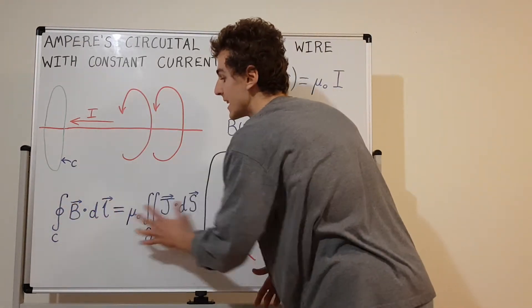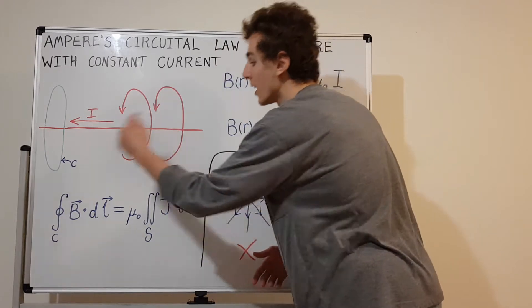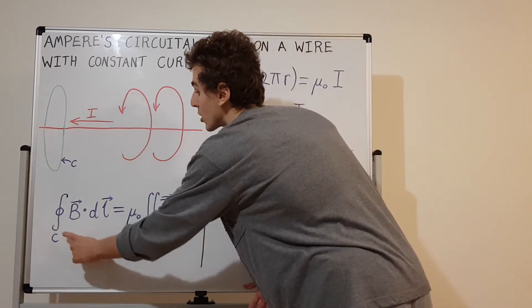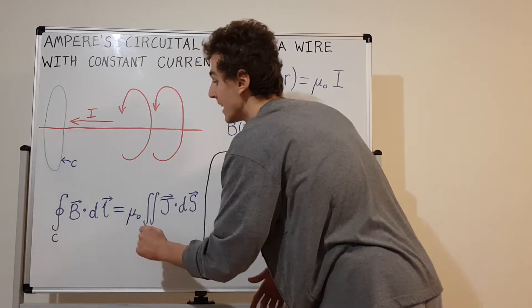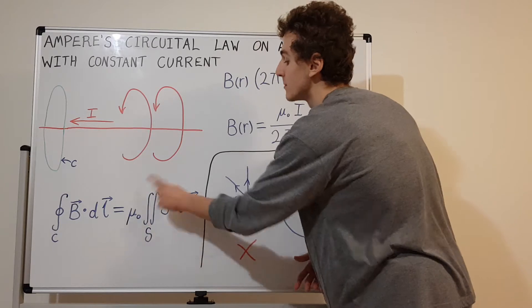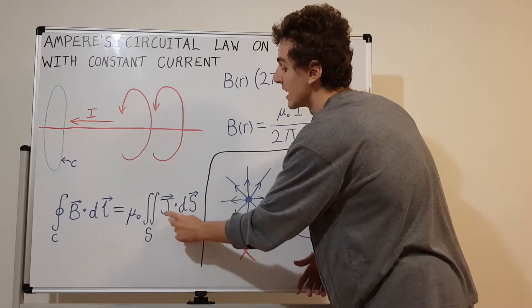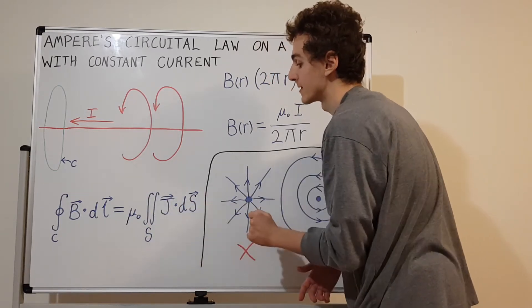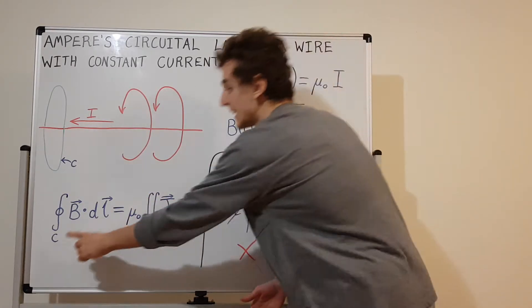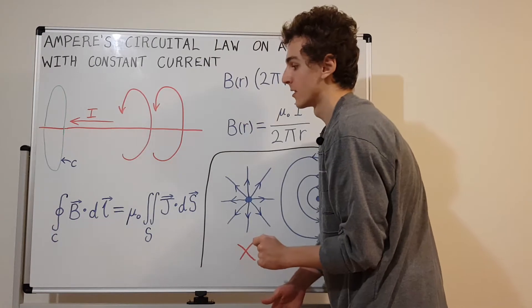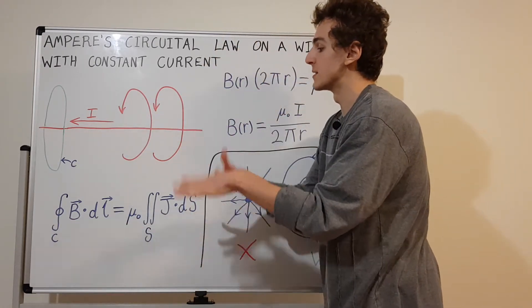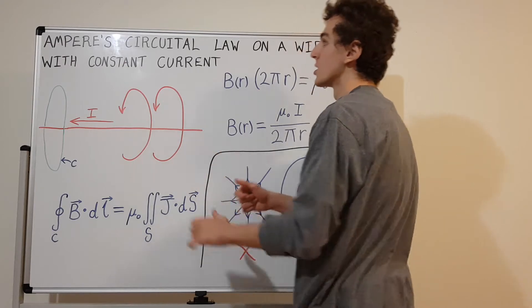Here it is stated in integral form. It says that the line integral of the magnetic field over a closed curve C is equivalent to μ₀, the permeability of free space, times the surface integral of the electric current density vector J. We're doing that surface integral over the surface S, where C is the boundary of S.